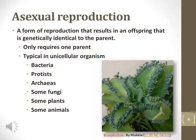Asexual reproduction is a form of reproduction that requires only one parent. Thus, the offspring are genetically identical to the parent. Asexual reproduction is typical in most unicellular organisms such as the prokaryotes bacteria, archaea, and the eukaryote protists. Some multicellular organisms are also capable of this, including some fish and reptiles that can undergo parthenogenesis, or the development of an unfertilized egg.